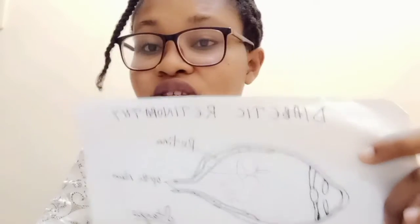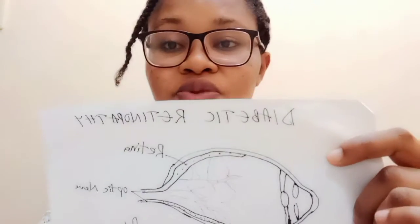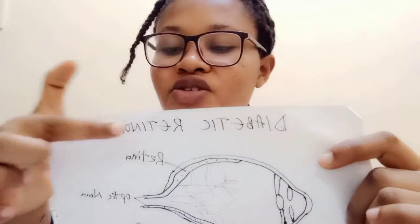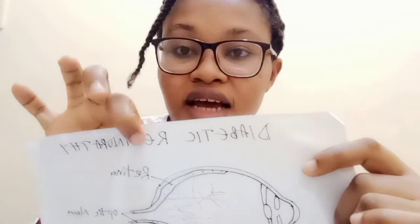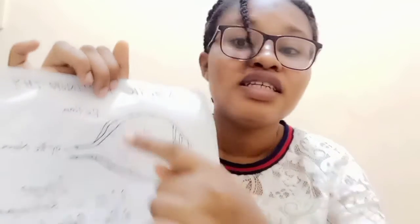Hello, today I will talk about some complications of diabetes mellitus. One of the complications is diabetic retinopathy — from this word, 'retinopathy' means disease of the retina due to diabetes. Diabetes is an increased blood sugar or glucose level in the body, and due to this increased blood glucose, it affects the retina.